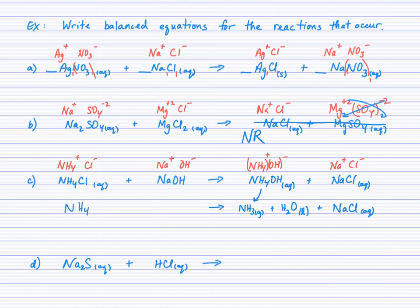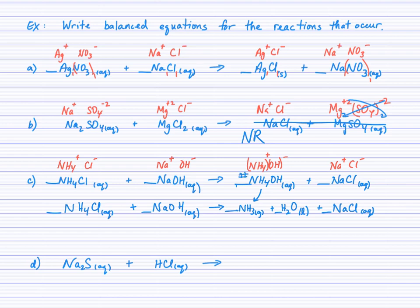The final answer involves both reactants and all three products. It's important to balance this equation. A useful trick: balance it at the double displacement stage, then transfer any coefficient down to the decomposition products. Everything is one-to-one here, so coefficients are all understood to be one.